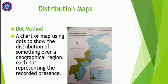Now here comes the distribution map. Distribution maps are maps which show how and where something is spread out or distributed over an area. These maps are divided into two types. The first type is the dot method.